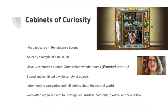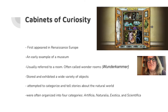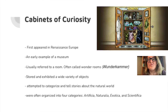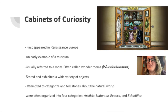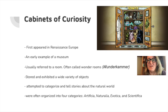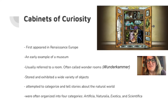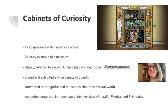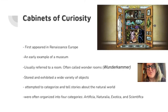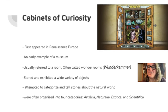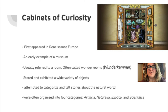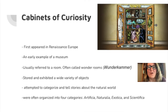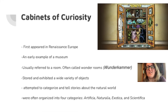To begin our study of the ancient development of museums, I'm going to draw your attention to cabinets of curiosity. These were mentioned a bit in the reading I asked you to do earlier. Cabinets of curiosity first appeared in Renaissance Europe and are an early example of a museum. They usually refer to a room, but are often called wonder rooms. It's often just a huge accumulation of very valuable and important things. They store and exhibit a wide variety of objects, attempt to categorize and tell stories about the natural world. Cabinets of curiosity were often organized in four categories.